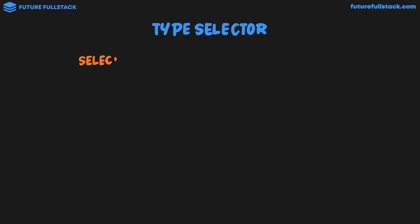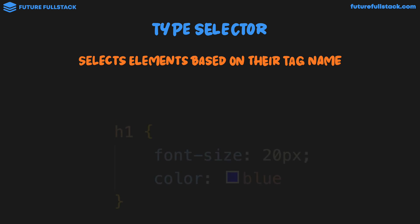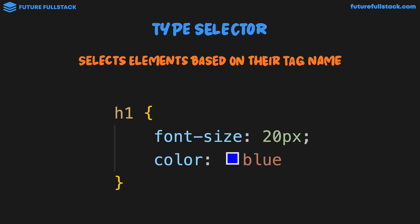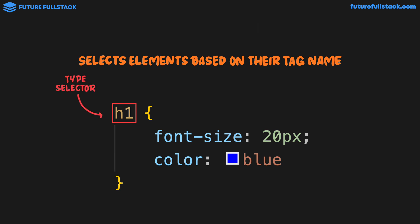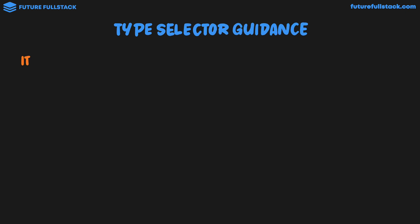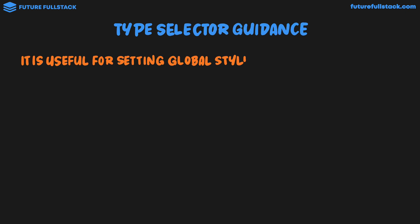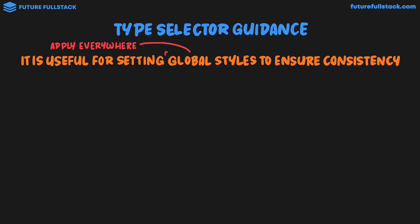The type selector selects elements based on their tag name. It's the selector we've been using so far — we target a specific HTML element like an H1. This is called the type selector. Let's now take a look at some type selector guidance. The type selector is useful for setting global styles to ensure consistency.